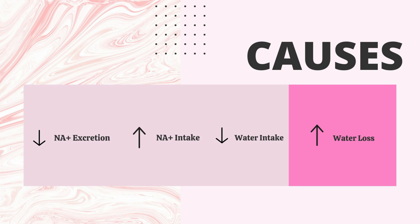There are four main causes of hypernatremia: first, decreased sodium excretion in the body; second, increased sodium intake; third, decreased water intake; and fourth, increased water loss. The first cause is decreased sodium excretion — when sodium is not excreted adequately, the sodium level will increase in your body.